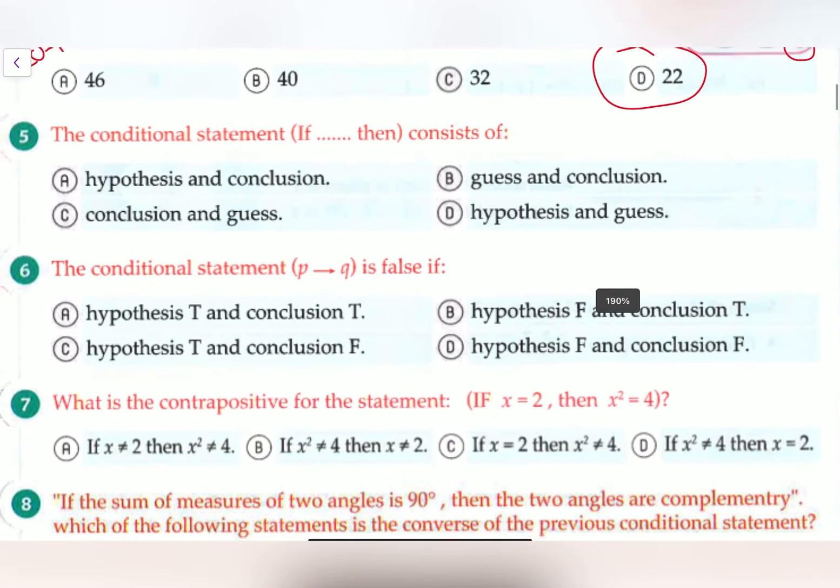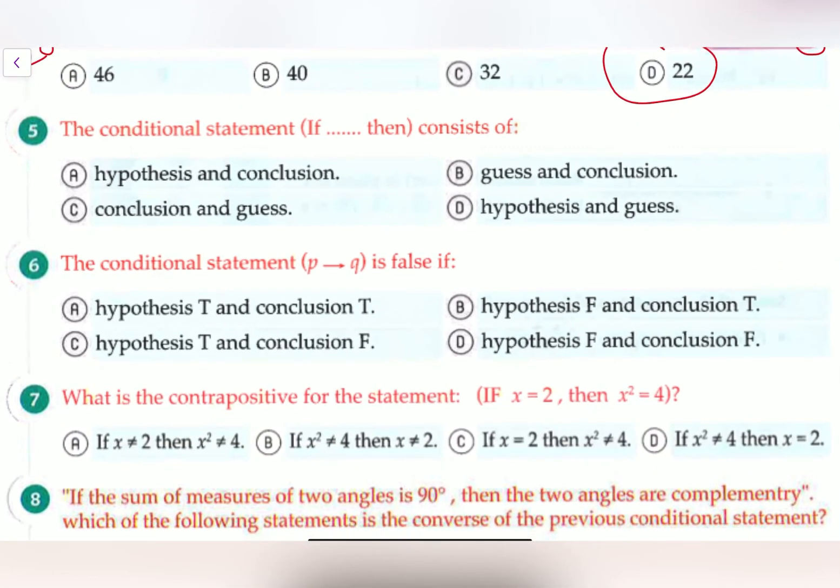So we have 20 plus 2, which is simply 22. So our answer is D. Now let's move on to question number 5. It says the conditional statement if, then, consists of. Well, we know that the conditional statement consists of a hypothesis and a conclusion because that's simply just the definition of a conditional statement. So our answer is A.